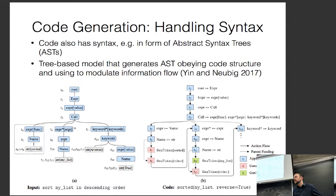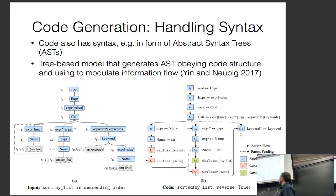This approach does well on generating Python code, which is more difficult than domain-specific languages because domain-specific languages have very small trees compared to Python code's large trees. The input is something like 'sort my list in descending order' and it tries to generate the implementation. Training data includes the card game dataset, the Django dataset of Python commands, and the bash dataset.